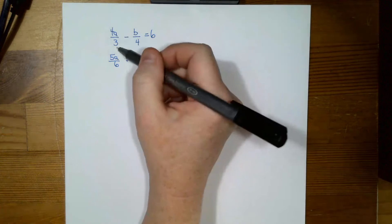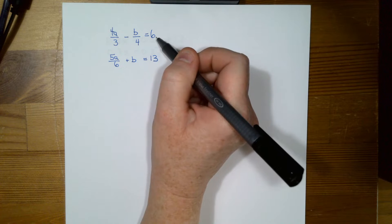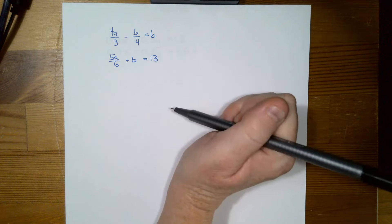I have 4a over 3 minus b over 4 equals 6 and 5a over 6 plus b equals 13.